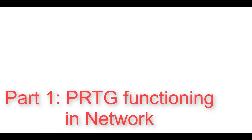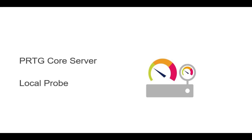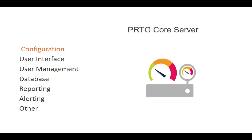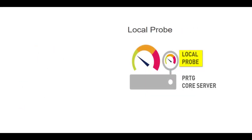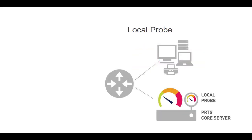A standard setup of PRTG network monitor consists of two components: the core server and the local probe. When you download and install PRTG, both are installed on the same machine. The core server is the heart of your PRTG system — it includes configuration, user interface, user and access management, the database, reporting, alerting, and other central management functions. The main monitoring is performed by the local probe, whose sensors communicate with devices in your network.